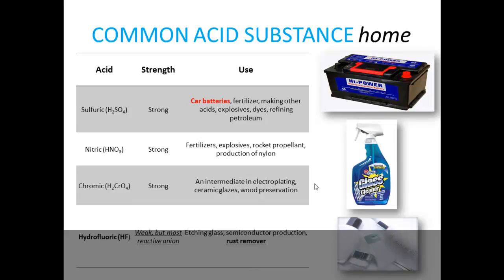The different substances include acids: sulfuric acid, which is very common in car batteries and fertilizers; nitric acid; chromic acid; and notably hydrofluoric acid, which is present in rust removers — it is actually a weak acid but has a reactive anion.